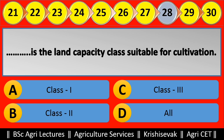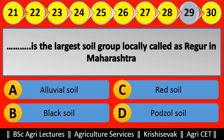Question 29: Blank is the largest soil group locally called Regur in Maharashtra. Options are: (a) Alluvial soil, (b) Black soil, (c) Red soil, (d) Podzol soil. Right answer is Black soil.